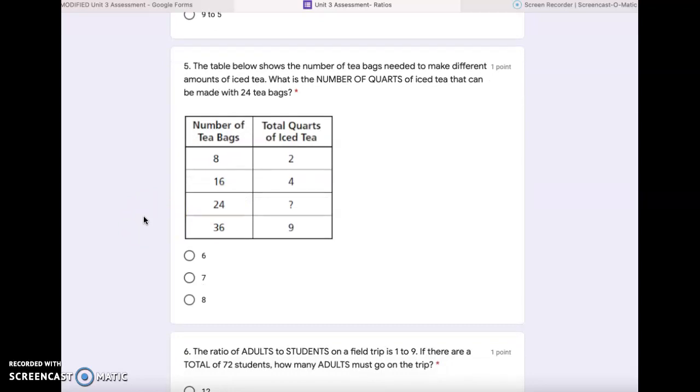Number 5. The table below shows the number of tea bags needed to make different amounts of iced tea. What is the number of quarts of iced tea that can be made with 24 tea bags? So look at your table and you're looking for the question mark. Look at your equivalent ratio table and figure out what value should go in that question mark box for 24 tea bags for the total quarts of iced tea. Is it 6, 7, or 8?